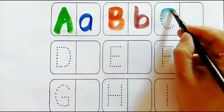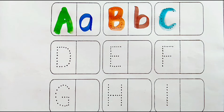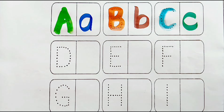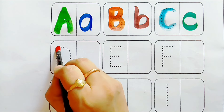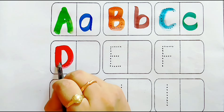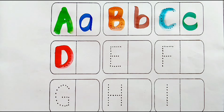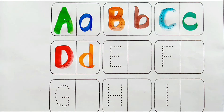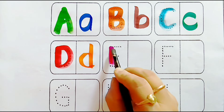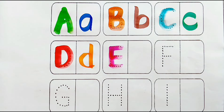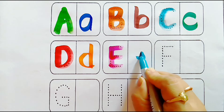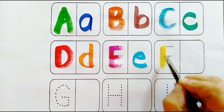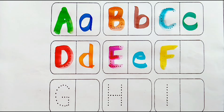Sky Blue color C. Dark Green color C - C for cat. Red color D. Orange color, small letter D - D for dog. Pink color, Sky Blue color, small letter E - E for egg.